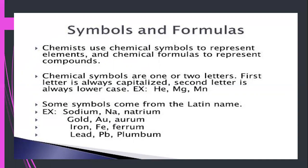The importance of chemical symbols is that they are used in the periodic table — we mostly use chemical symbols there rather than writing the full names of the elements. Secondly, when we write chemical formulas and chemical equations, we use chemical symbols.